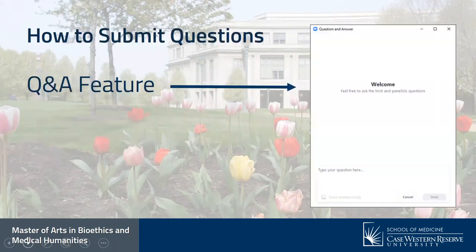As we go through, if you have questions, there's a Q&A feature in Zoom that allows you to submit your questions. There should be two chat bubbles on a desktop you can click on to type in your question. If you're on a tablet or phone, there should be an ellipses — three dots — that lets you open up the Q&A feature to submit questions.